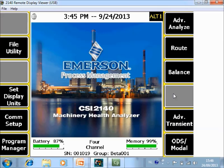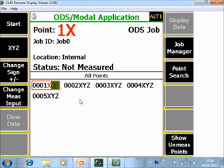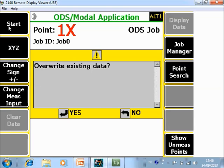What you are seeing now in front of you is the home screen of the CSI 2140 Machinery Health Analyzer. We go to F12 ODS model. Here is the job that we configured in the other video tutorial. I will start the machine and collect data on the first point. I simply push start to collect the data.